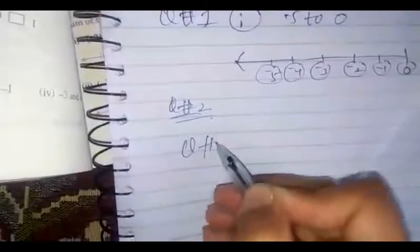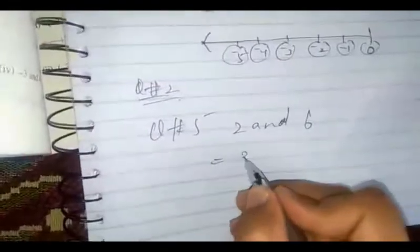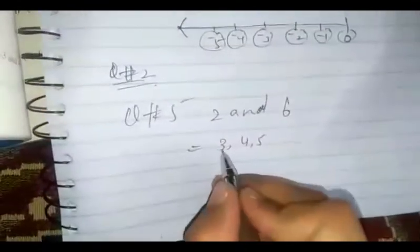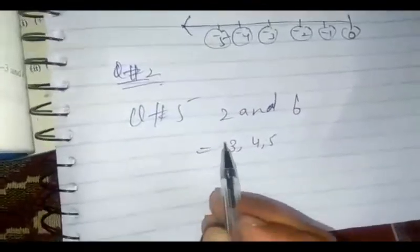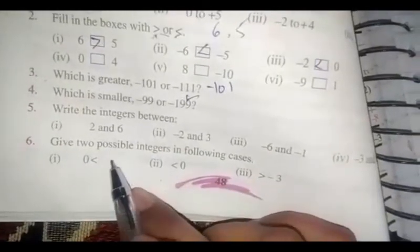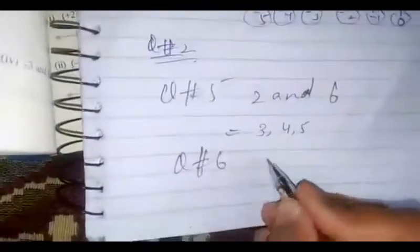Write the integers between 2 and 6. Question number 5: we have to write the integers between 2 and 6, so the integers between 2 and 6 are 3, 4, and 5. Similarly, you have to do the remaining parts of question number 5. Question number 6: give two possible integers in the following cases. For example, write two integers greater than 0 — the two integers greater than 0 are 1 and 2. Similarly, you have to do the remaining parts by yourself.